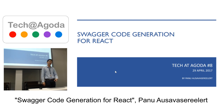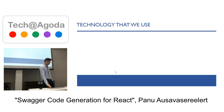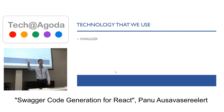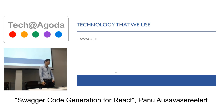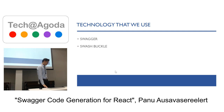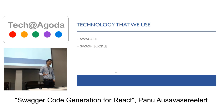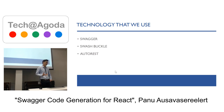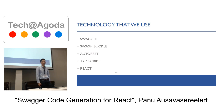What I'd like to talk about today is Swagger code generation for React. Let's talk about the technology we're using. We use Swagger — an open source library that helps you design, build, document, and consume your REST APIs. We also use Swashbuckle, a NuGet library that lets you use Swagger attributes in your code. We use AutoRest, a tool used to generate the client library for your REST web service. And we use TypeScript and React to build a single page application.